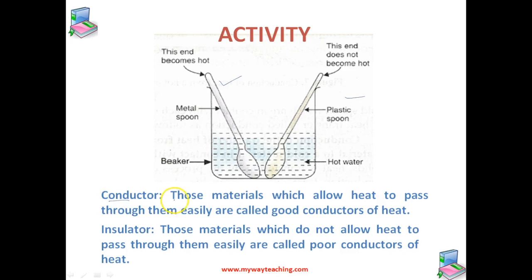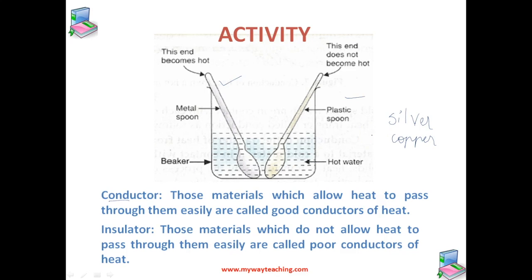Conductors are those materials which allow heat to pass through them easily, so we call them good conductors of heat. Usually all metals are good conductors of heat — for example, silver, copper, aluminium, iron, and mercury. Though all metals are good conductors, some are better than others. Silver is the best conductor of heat, copper is one of the best conductors, and aluminium is also a good conductor of heat.